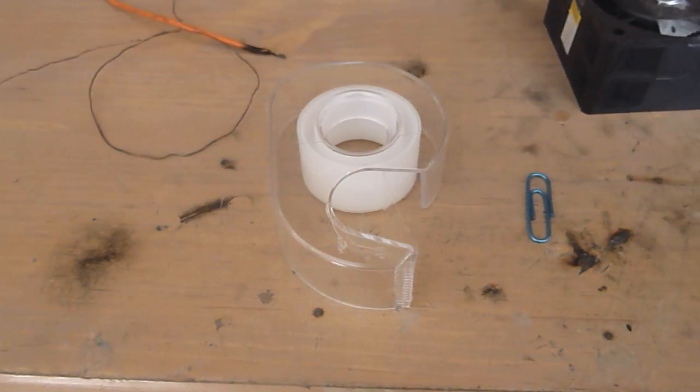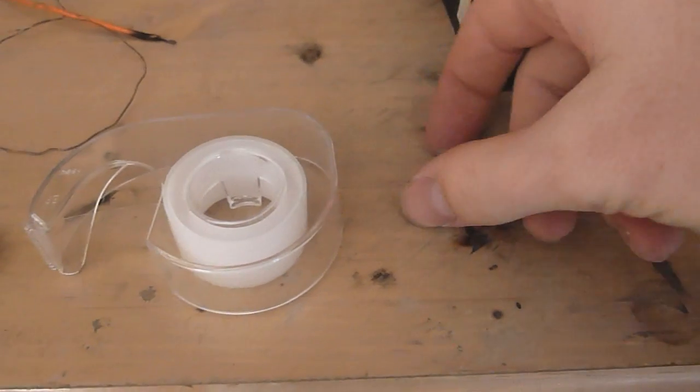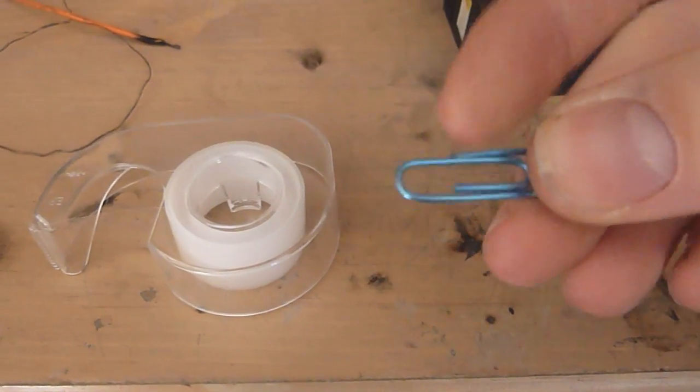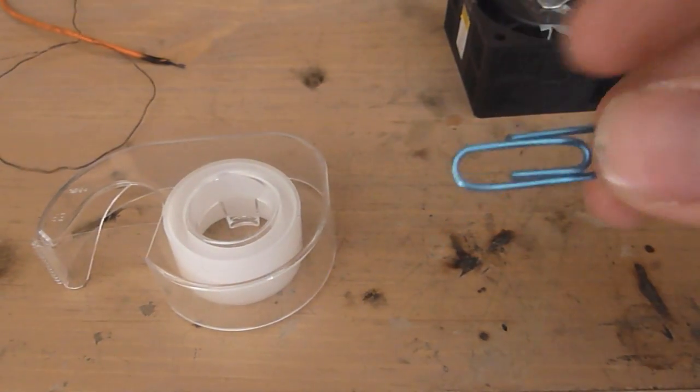All righty, so the parts you're going to need are some tape, a paper clip. Probably not one you want one that's silver, not one like this. I already have another one but I already bent it.